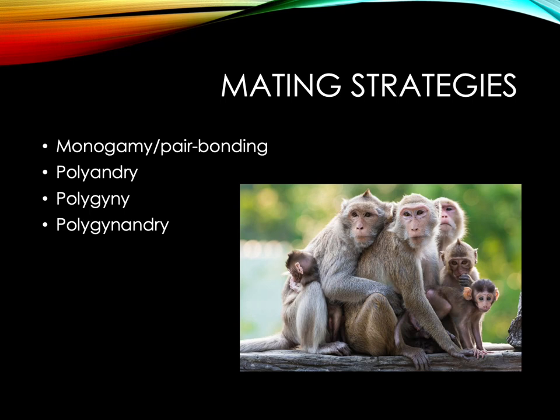Finally, there are different types of mating strategies, which often align with social structures but not always. Monogamy is pair bonding — one male, one female. Polyandry is multiple males and one female reproducing. Polygyny is one male, multiple females. Polygyndry is multiple males and multiple females — what we call promiscuity in anthropology, with no moral value attached to that term.